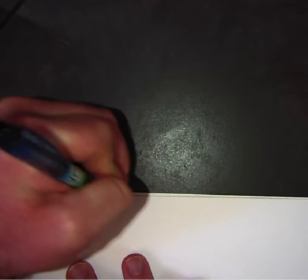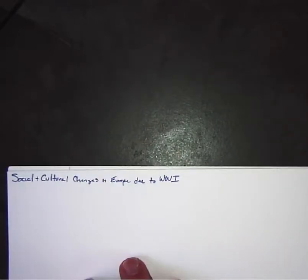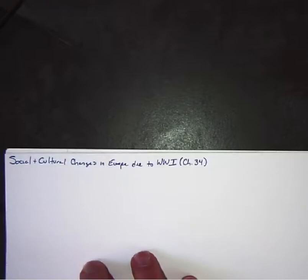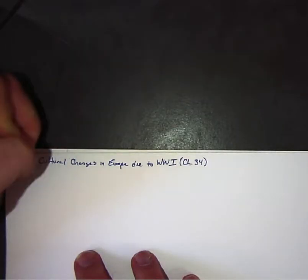In this video we are going to look at some social and cultural changes that took place in Europe due to World War I. This is chapter 34. We've already covered the big economic stuff that happened as a result of World War I, the Great Depression. Now we're going to look at social and cultural changes in Europe and how these led to some political changes.